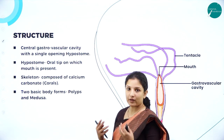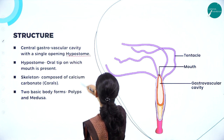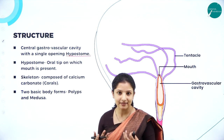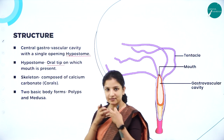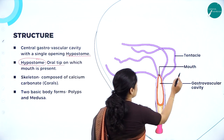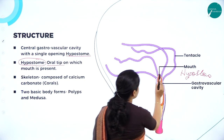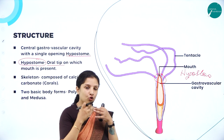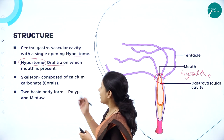Talking about their gastrovascular cavity, they have a central gastrovascular cavity with a single opening called the hypostome. The hypostome is the oral tip from which the tentacles arise. So the opening at the mouth region of nidarians from where the tentacles arise is called the hypostome.